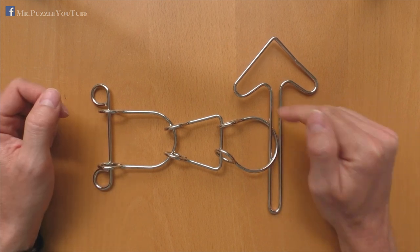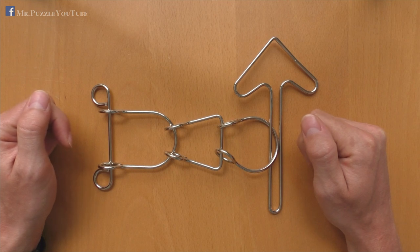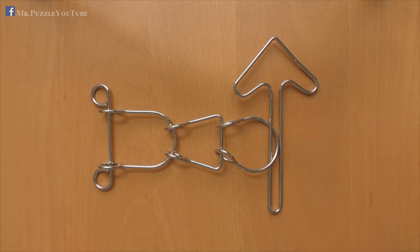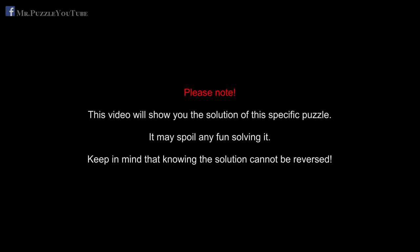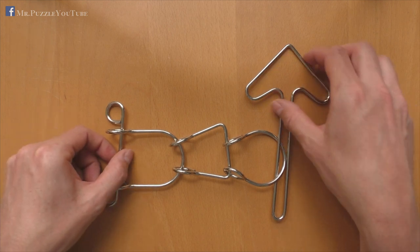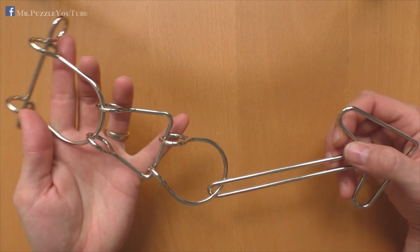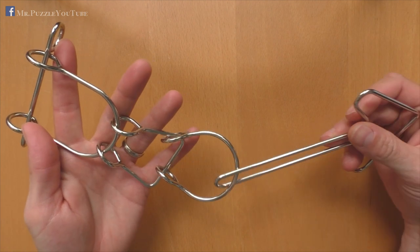How to solve it, and how to remove the arrow from the rest of the parts, I will show you after the spoiler break. Okay, here we go. So, how to get the arrow out of this wire puzzle?